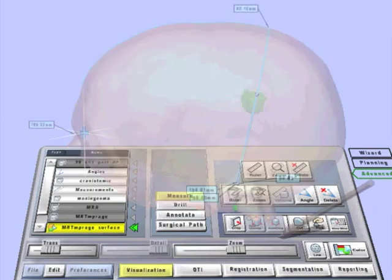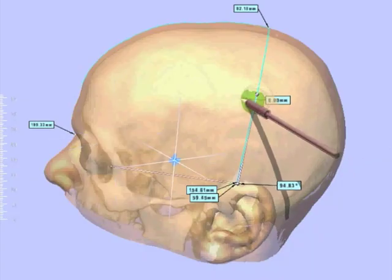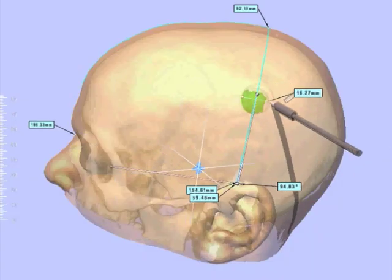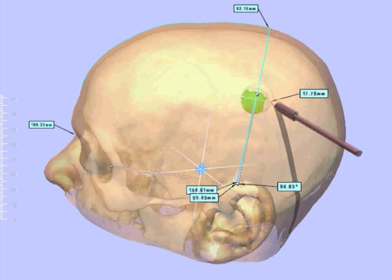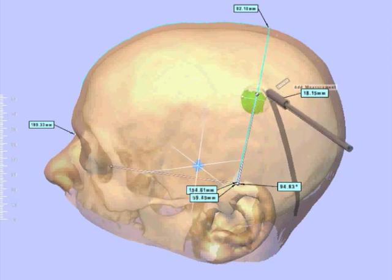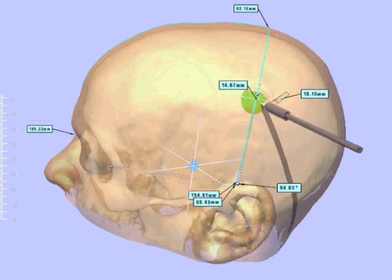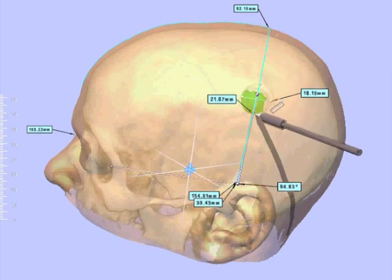Finally, by using the straight ruler, we are able to measure the anterior-posterior and the craniocaudal extension of the craniotomy.